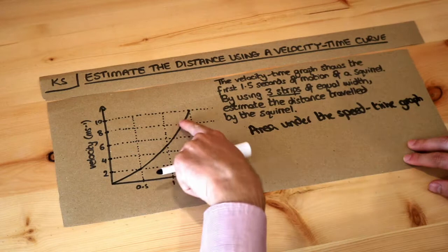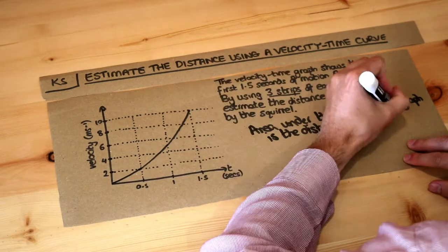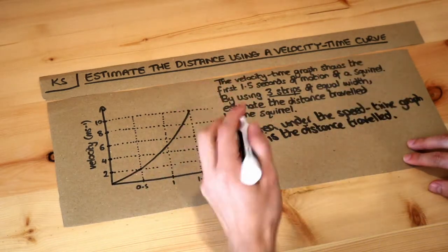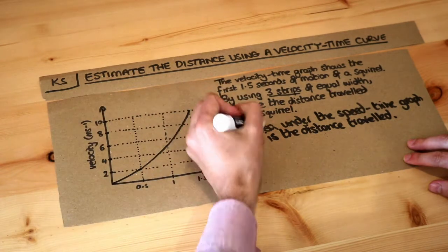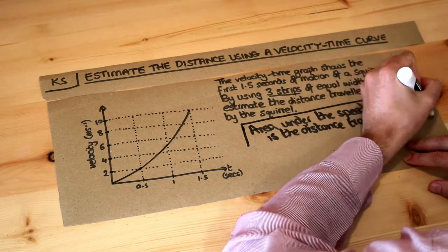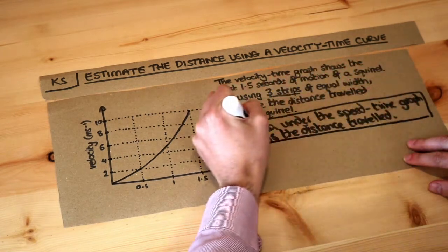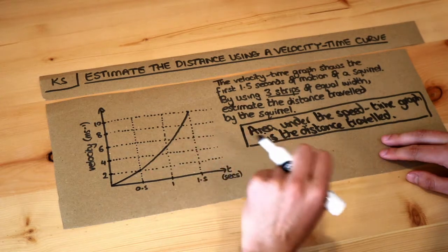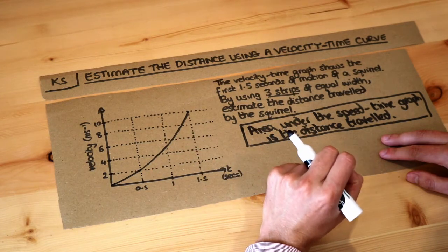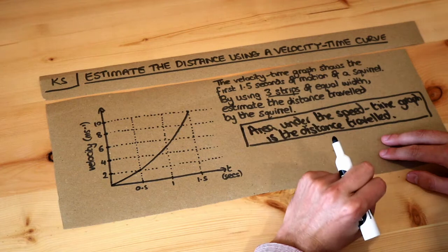So we need to find the area under this curve. Now if your graph involves straight lines it's easier—we might have a triangle or trapezium and we know how to find the area of that. But because we've got this curve it makes the area much harder to find. So what we do is we approximate the area under the graph by splitting it into polygons, so just shapes with straight edges.